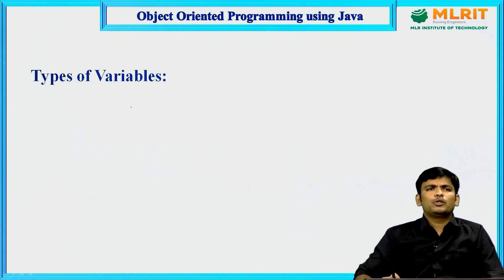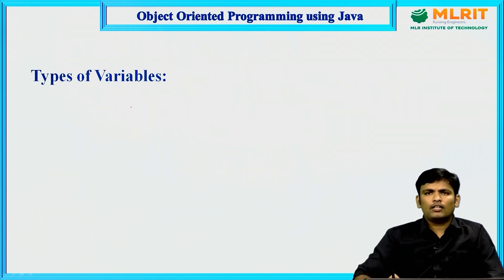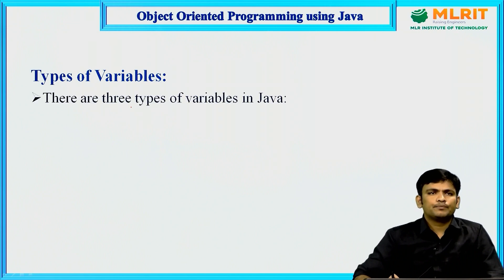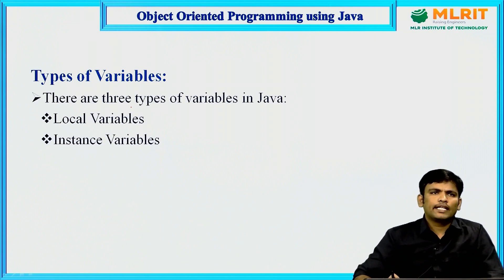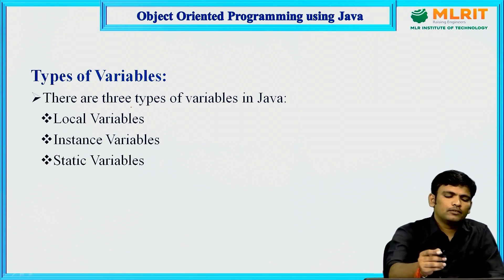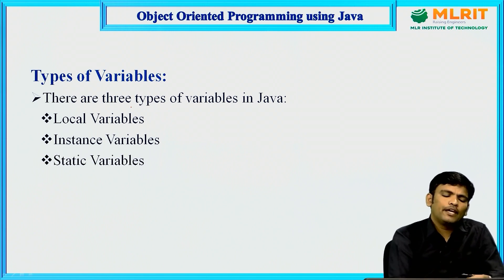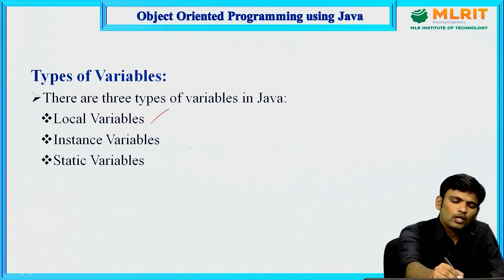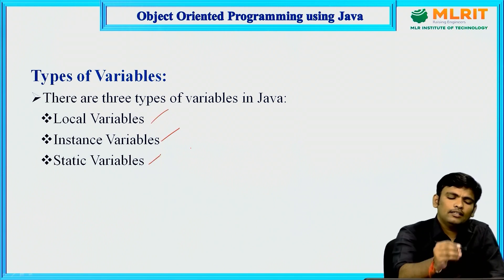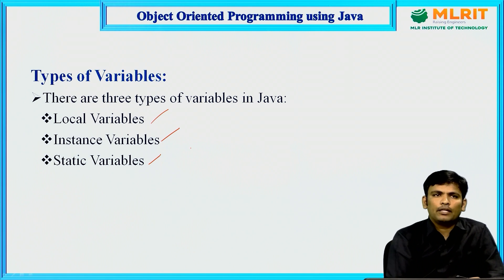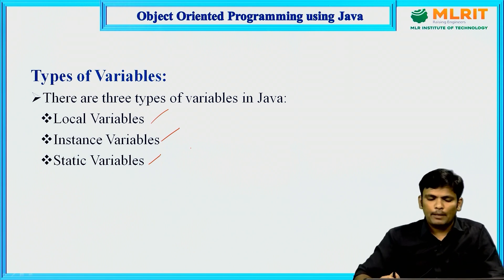Coming to the types of variables: in Java, variables can be categorized into three types — local variables, instance variables, and static variables. We will discuss them one by one.